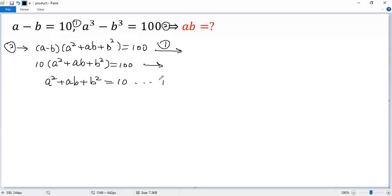Denote this one as condition 3. Now, from 1, square both sides, so we get a squared minus 2ab plus b squared. The right side, 10 squared equals 100. Let's denote that as condition 4.